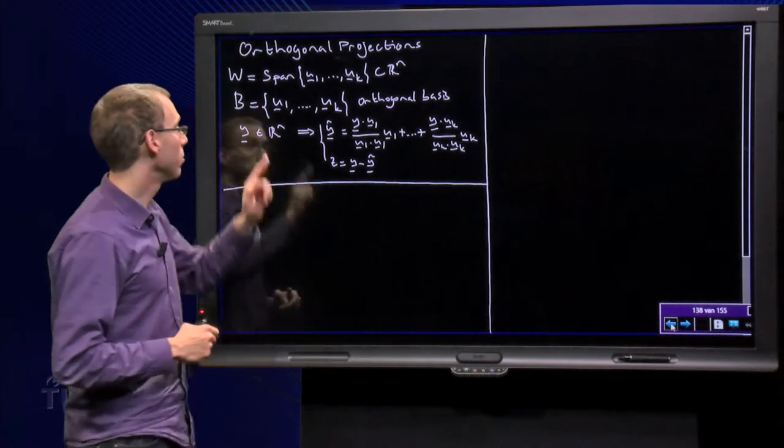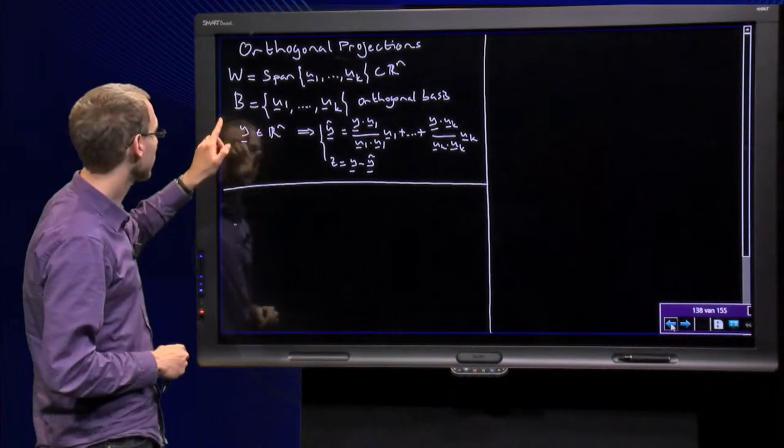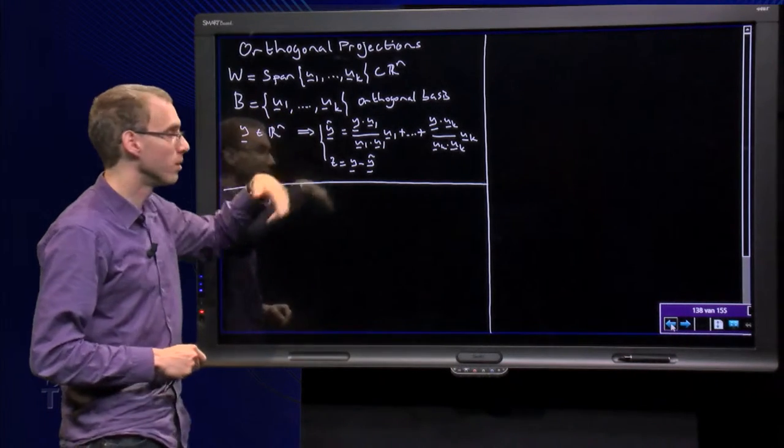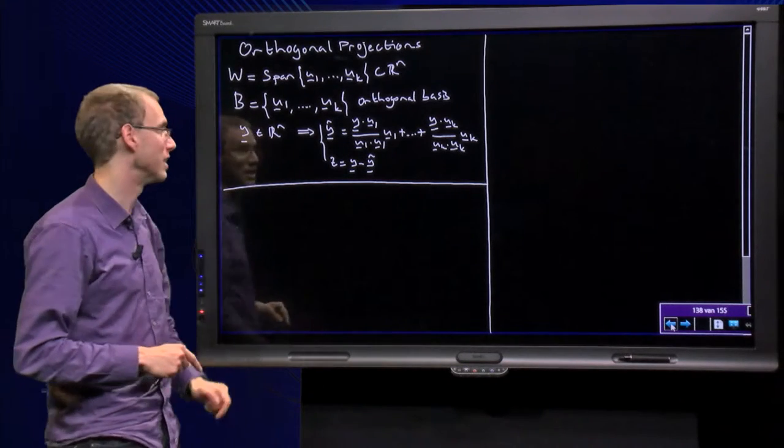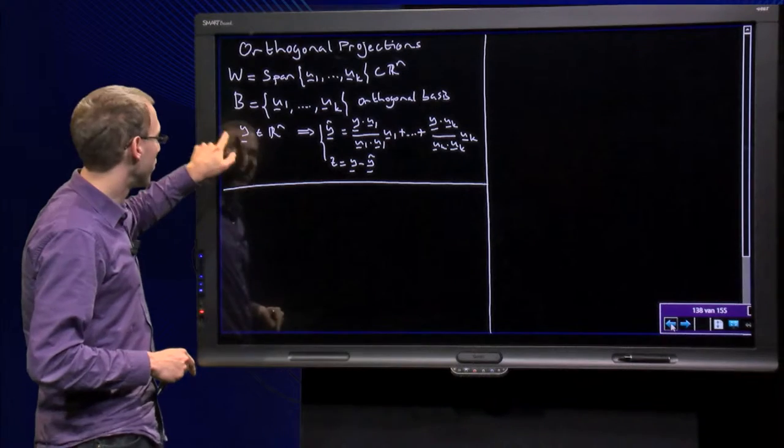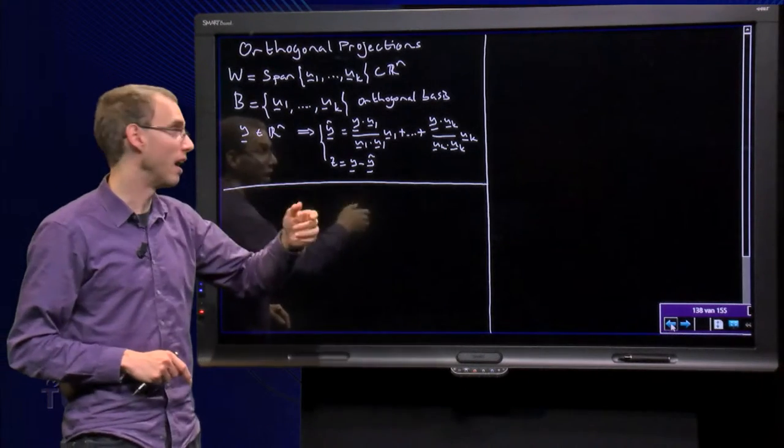Suppose we have w given as some span u1 to uk in Rn and let B consisting of u1 to uk be an orthogonal basis. Then if I have a y in Rn, I can find the orthogonal projection of y as follows.